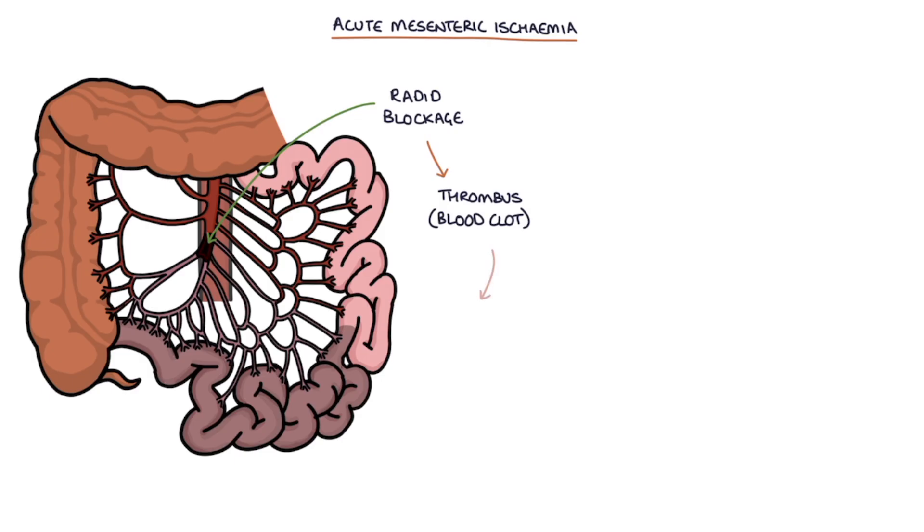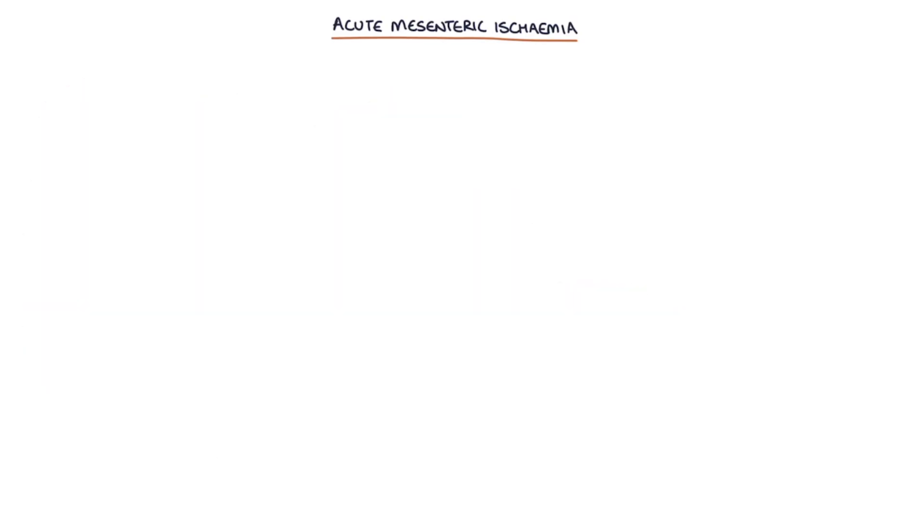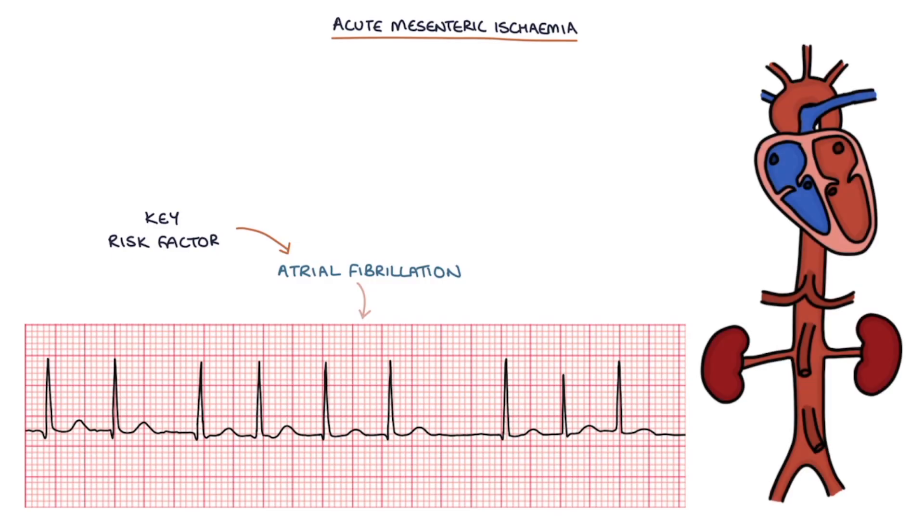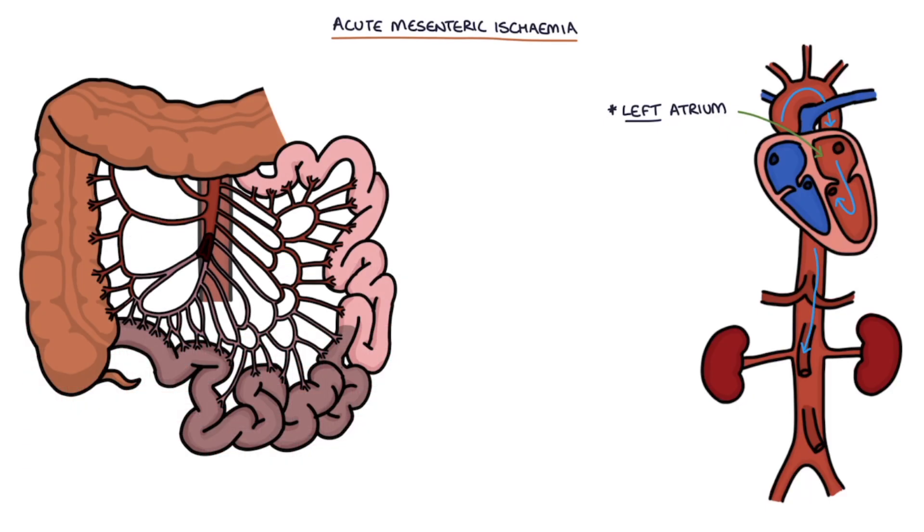The blood clot may be a thrombus that has developed inside the artery or an embolus that has come from another site that has then got wedged inside the artery. A key risk factor is atrial fibrillation where a thrombus forms in the left atrium then mobilizes which we call thromboembolism down the aorta into the superior mesenteric artery where it gets stuck and cuts off the blood supply.